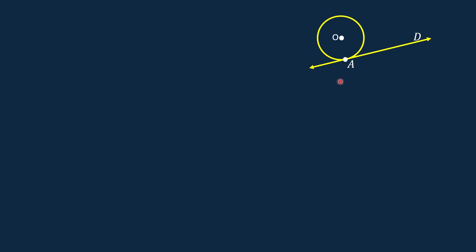This is the point of tangency. This is another tangent to circle O. Let us name this tangent, tangent dC. This is the point of tangency. Tangent dA and tangent dC, which are tangent to circle O, intersect at point D.